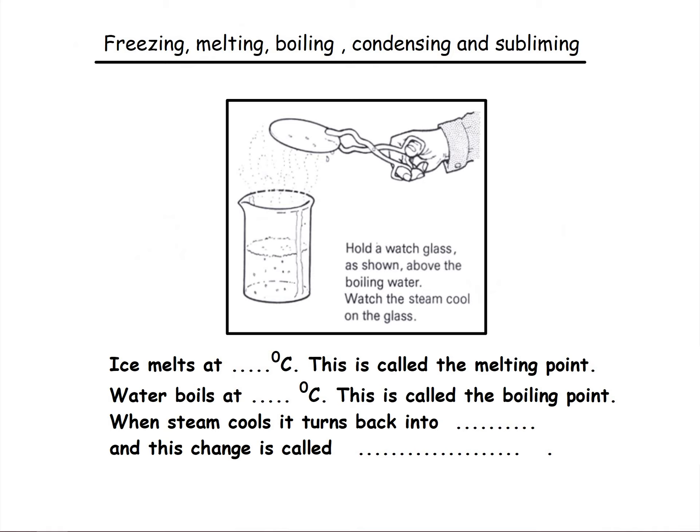And finally, I don't actually have a video to show you of this. But if you imagine, if you were to put the kettle on at your home. And then above the kettle, you hold a dinner plate. And the steam rises up. And then underneath the plate, the steam starts to cool down. It starts to condense. You start to get liquid water forming. Now, ice melts at 0 degrees C. This is called its melting point. Water boils at 100 degrees C. This is called the boiling point. When steam cools, it turns back into liquid water. And this change of state is called condensing.